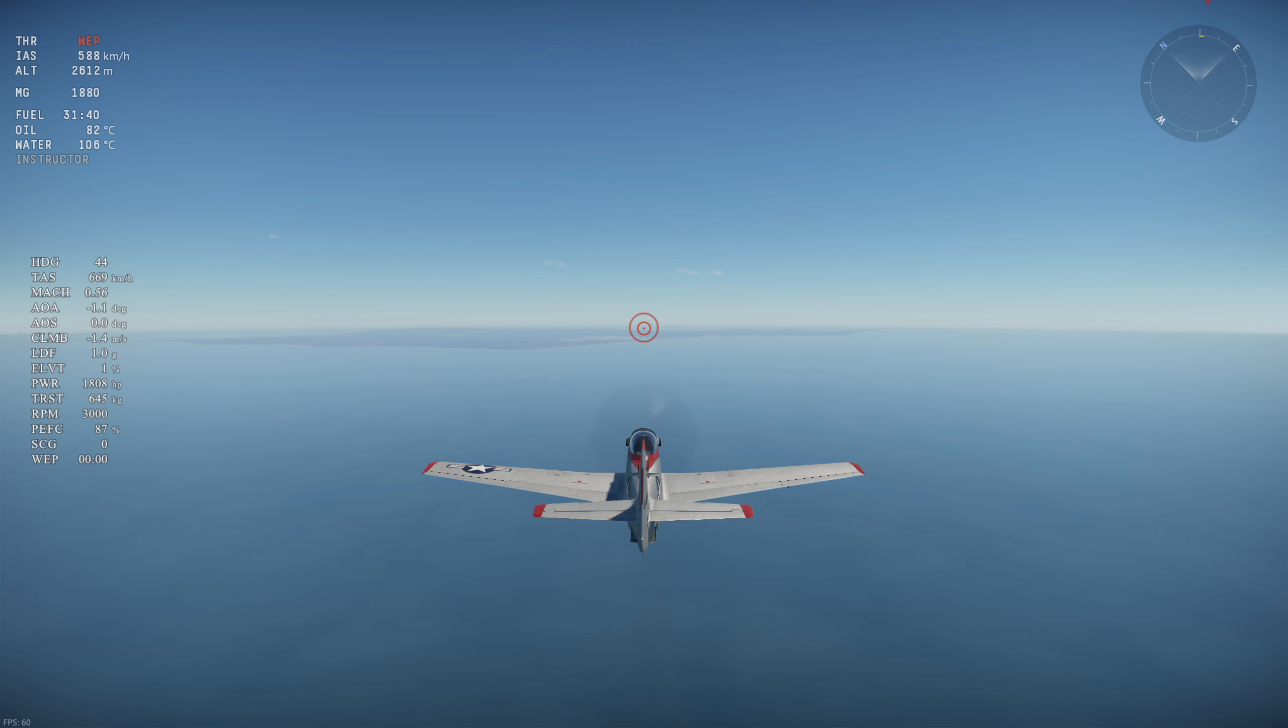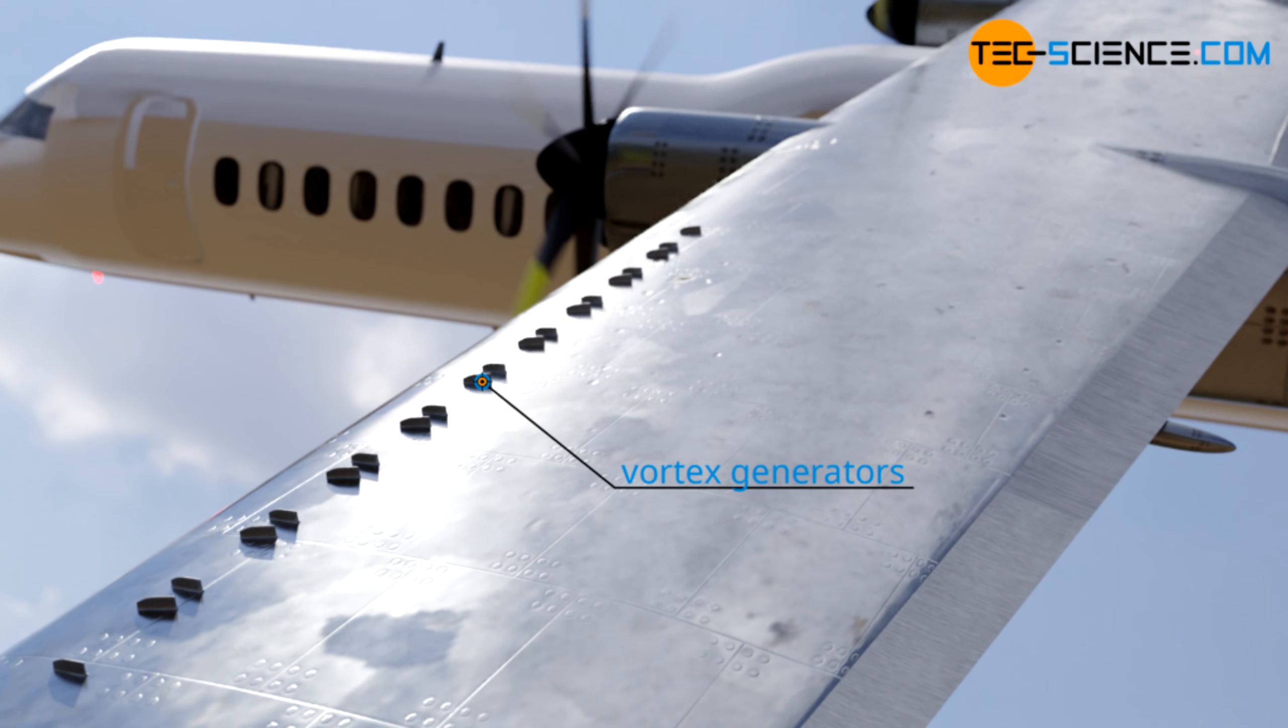Turbulent flow has its advantages as well. Commercial airliners even have vortex generators to make sure they have turbulent flow during takeoff and landing to delay the stall.